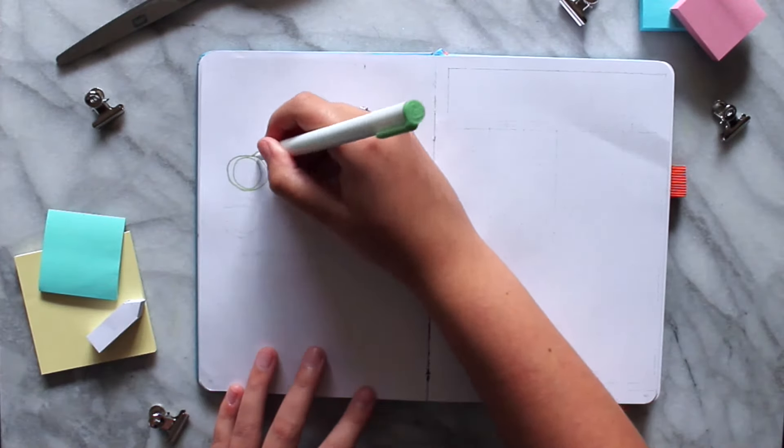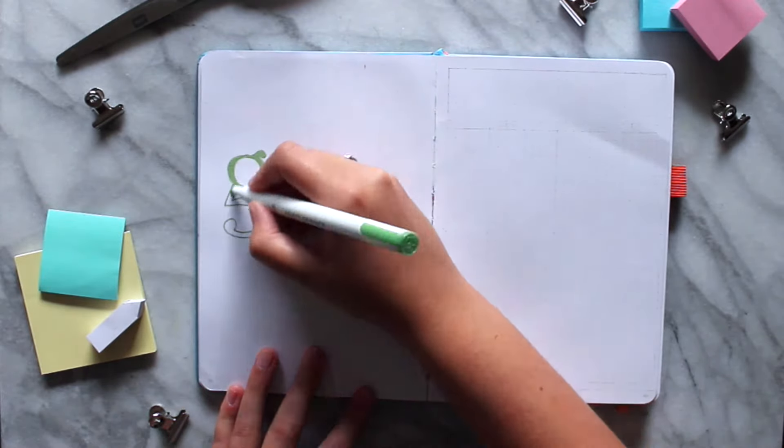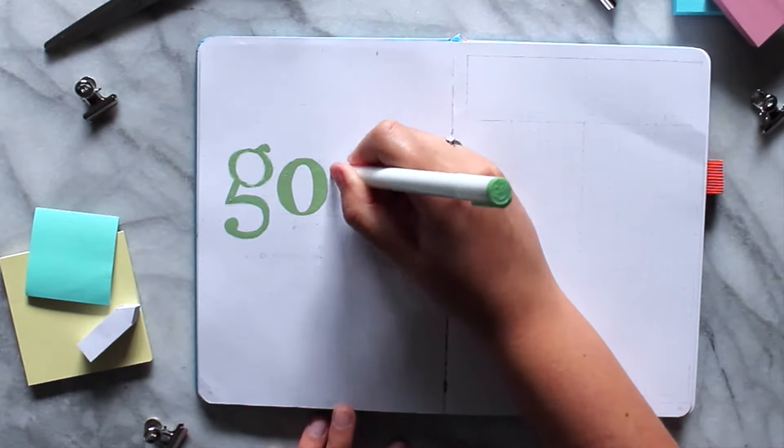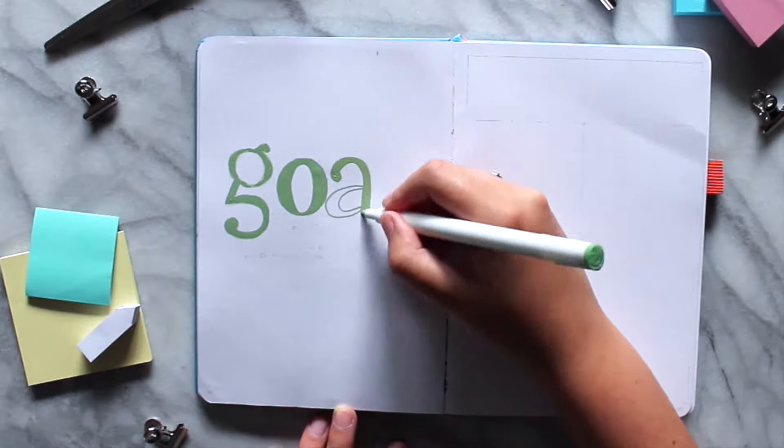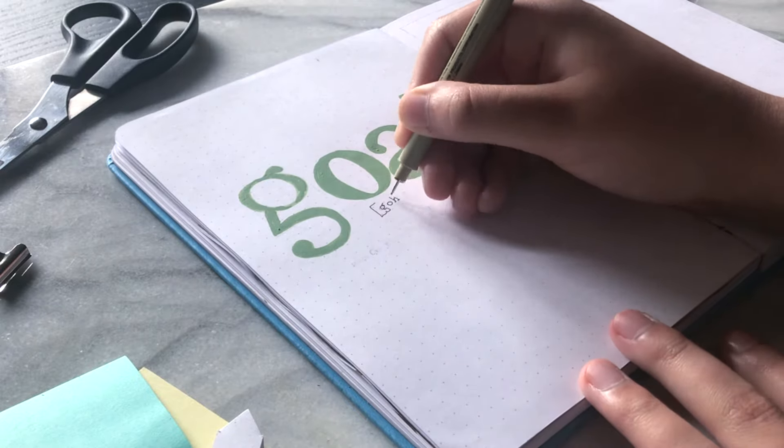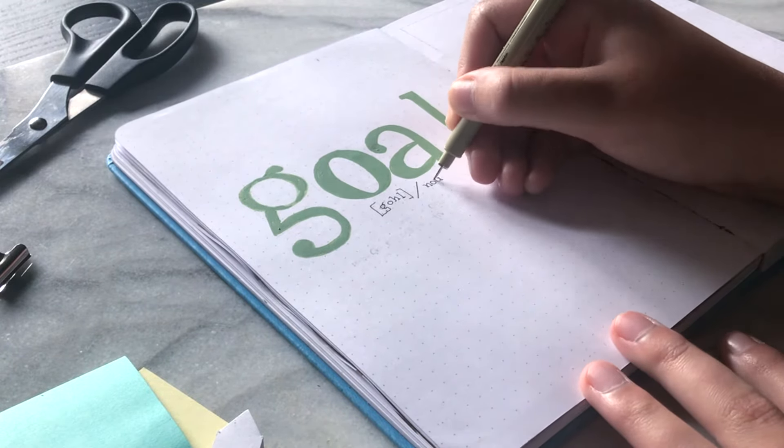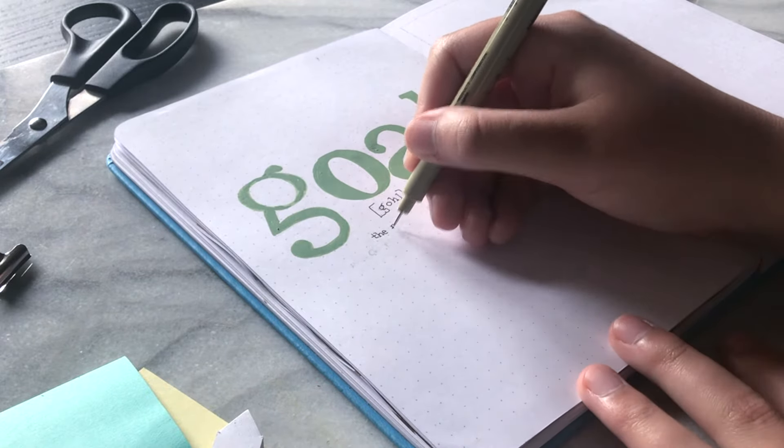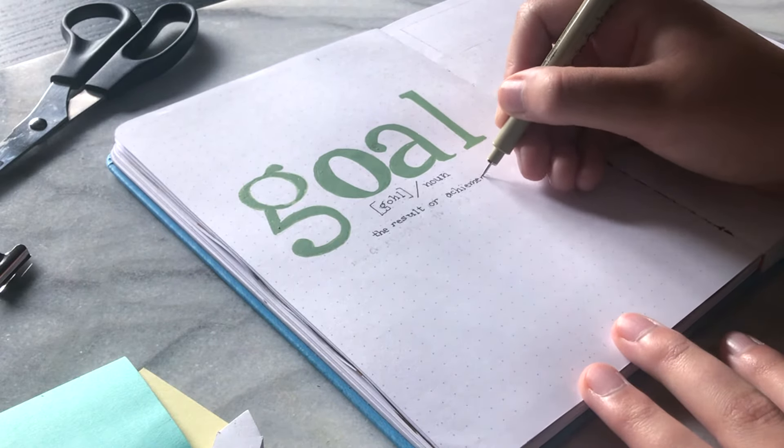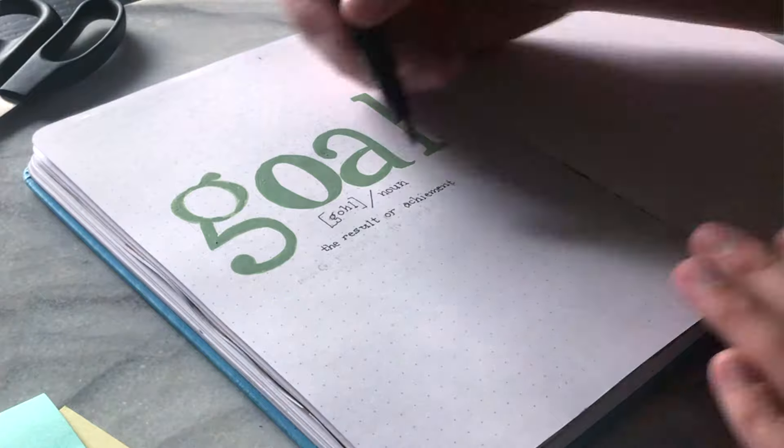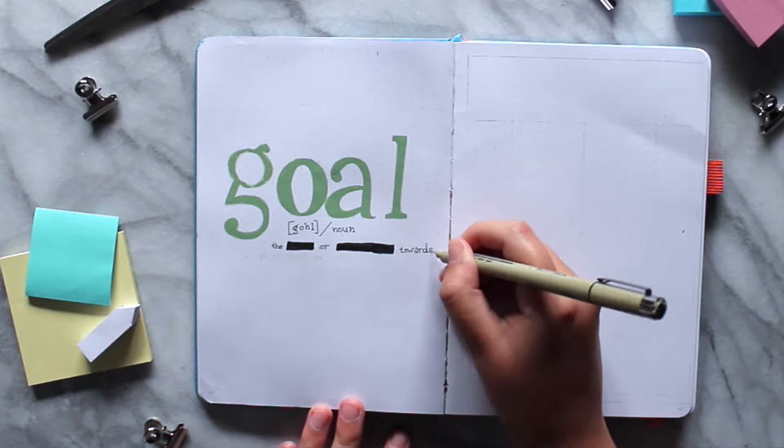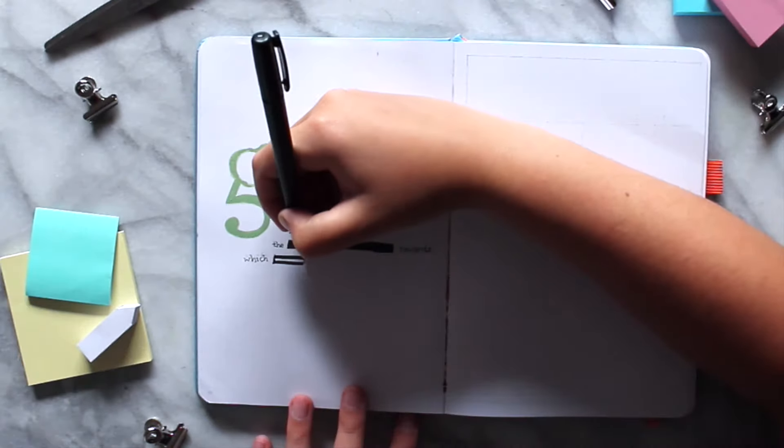So you might be thinking okay Caitlin how many student bullet journal videos can you create? And let's just say I got a lot because I did use a lot of stuff when I was at school myself. And the first thing that I always thought of was I need to come up with a goal. Here I wrote out goal and the definition. I did end up making a little bit of a spelling mistake so I came over top here just with a black pen and covered up the word but then also added some other black spots to make it look a little bit more cohesive.